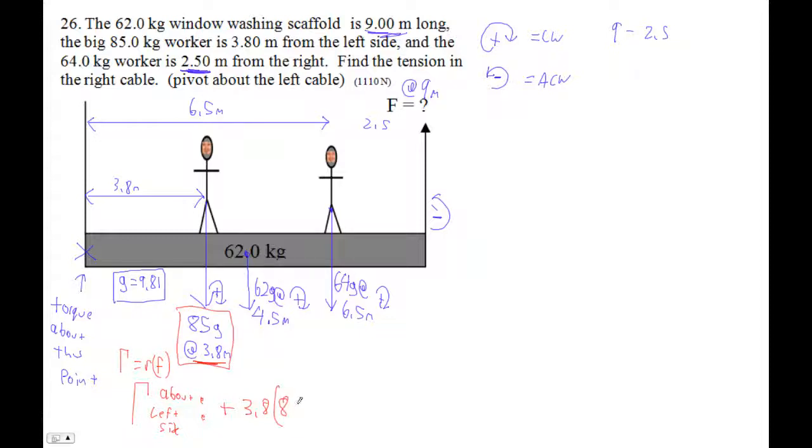Times 85 times 9.81. Those g's are all 9.81s. The next one is plus 4.5, because this guy is going to be a clockwise torque. 4.5 times 62g. And then there's this guy here, so that's going to be positive. Positive 6.5 times 64g. And then finally, we've got an anti-clockwise torque. So minus, that's 9. It's all the way out here, 9 meters from the left side. 9 times F. And that equals 0.